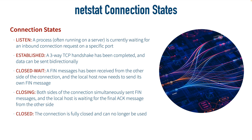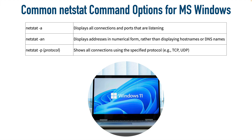Here are some common NetStat options on Microsoft Windows. NetStat -A shows all connections on the system. If you'd prefer to see IP addresses rather than host names or DNS names, use NetStat -AN to display addresses in numerical form. Or use NetStat -P TCP to filter the output and show only TCP connections. Now let's go to a live Microsoft Windows interface and see these commands in action.